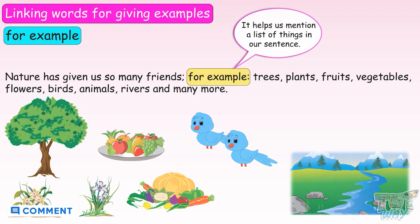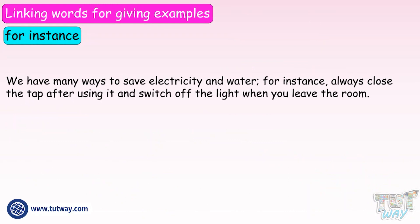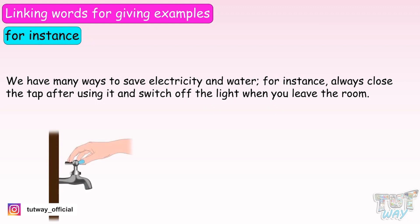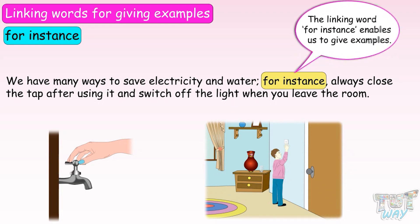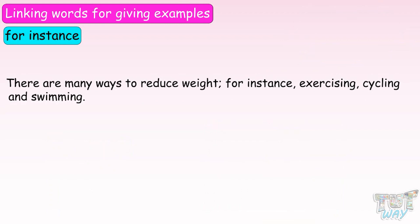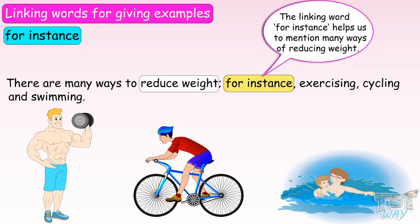Next linking word is 'for instance'. 'We have many ways to save electricity and water. For instance, always close the tap after using it, and switch off the light when you leave the room.' So, 'for instance' enables us to give many examples. 'There are many ways to reduce weight. For instance, exercising, cycling, and swimming.' Here again, 'for instance' helps us to mention many ways of reducing weight.